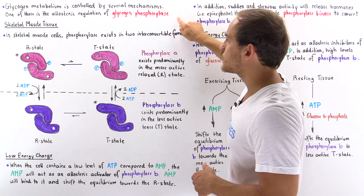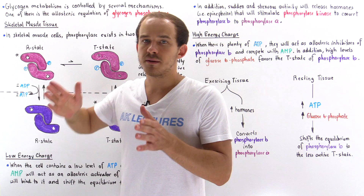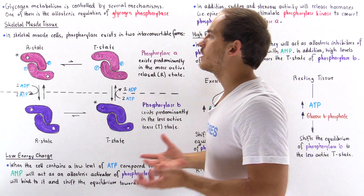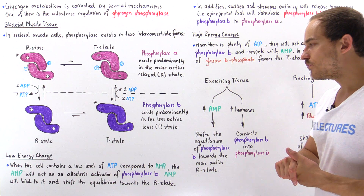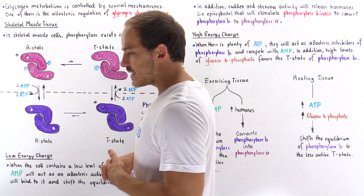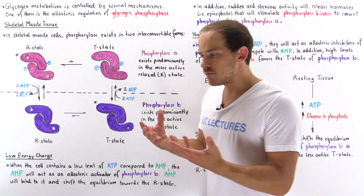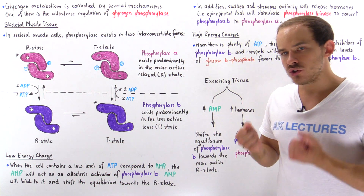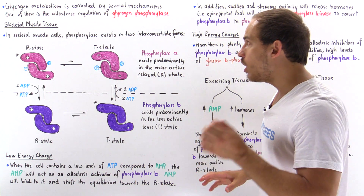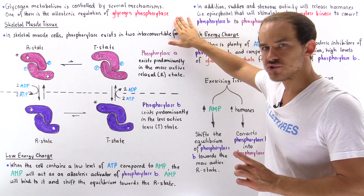Glycogen phosphorylase cleaves the alpha-1,4 glycosidic bond and releases a glucose 1-phosphate from the glycogen polymer molecule. Because skeletal muscle cells and liver cells have slightly different functions in terms of what they do with the glucose once released from glycogen, they also regulate glycogen phosphorylase in slightly different ways.